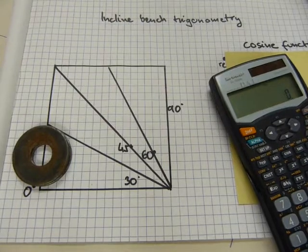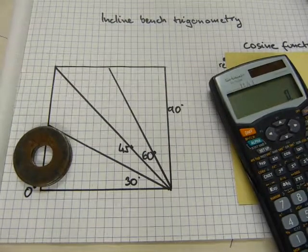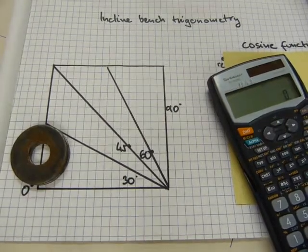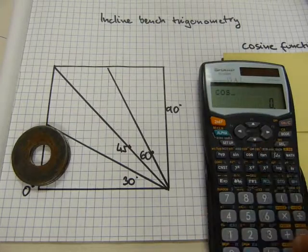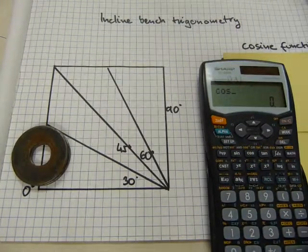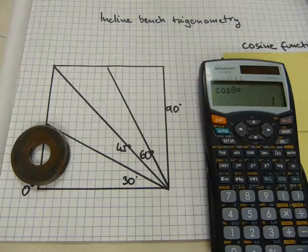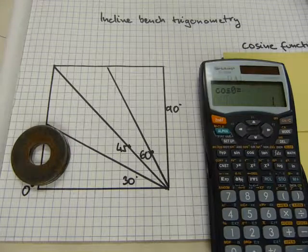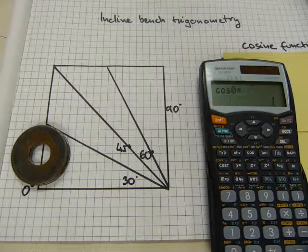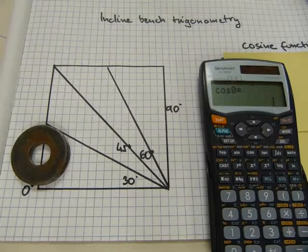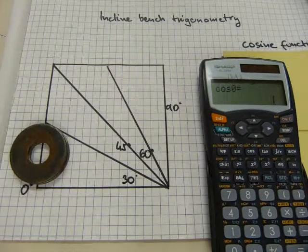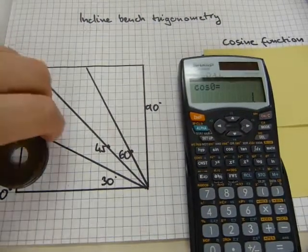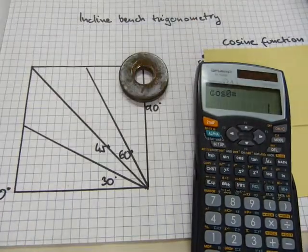In this scenario, what the cosine function tells us—if I enter cosine zero, zero degrees equals one—it means one hundred percent. The bench's efficiency and your strength is at one hundred percent. This is one hundred percent in reference to all the other angles.